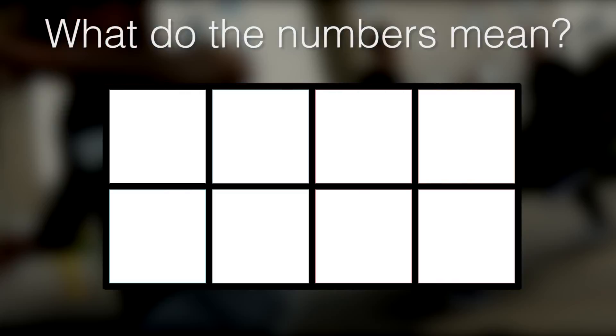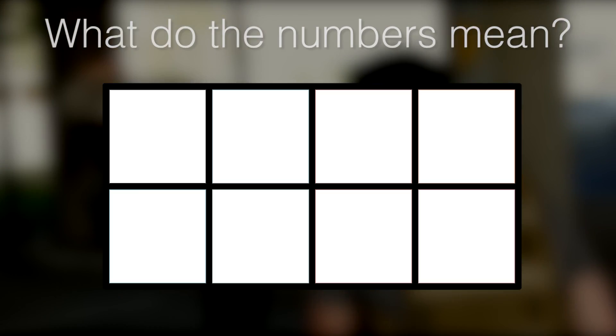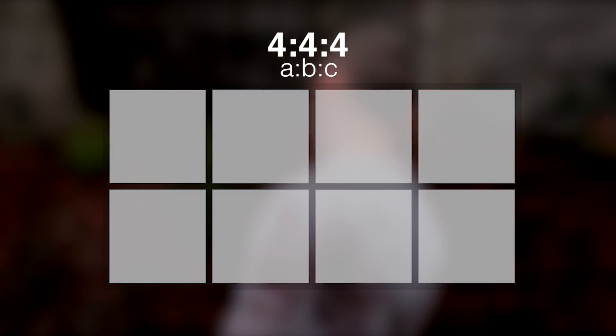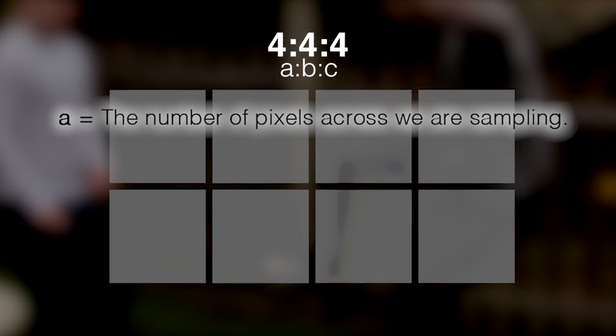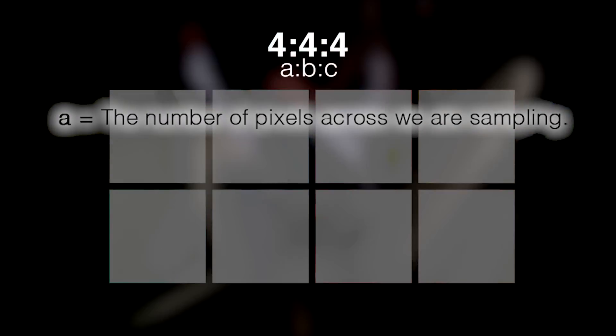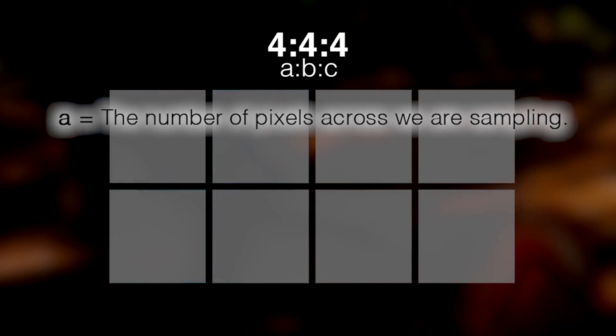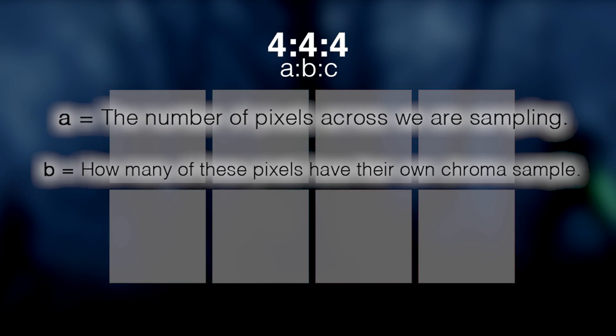We're going to start off by picturing it as a 4 by 2 grid, as this is how it is usually judged. So you've got your numbers 4:4:4, which are represented by A, B, and C for our example. A is how many pixels we are talking about — for example, the number of pixels across on the top row.